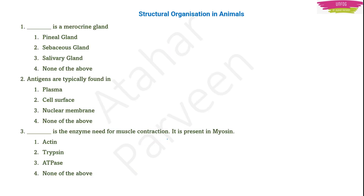Let's look at the other questions. These are some important questions that might be asked in this year's Karnataka TET exam. The first new question is: dash is a merocrine gland. Merocrine glands are those glands that store some substances and release them outside without damaging any of their cells. Those types of glands are called merocrine glands.